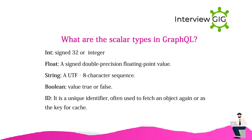What are the scalar types in GraphQL? Int: signed 32-bit integer. Float: double-precision floating point value. String: a UTF-8 character sequence. Boolean: value true or false. ID: a unique identifier, often used to fetch an object again or as the key for a cache.